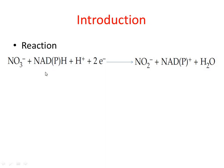The most common form of nitrate reductase uses only NADH as an electron donor. Another form of the enzyme, found predominantly in non-green tissues such as roots, can use either NADH or NADPH.